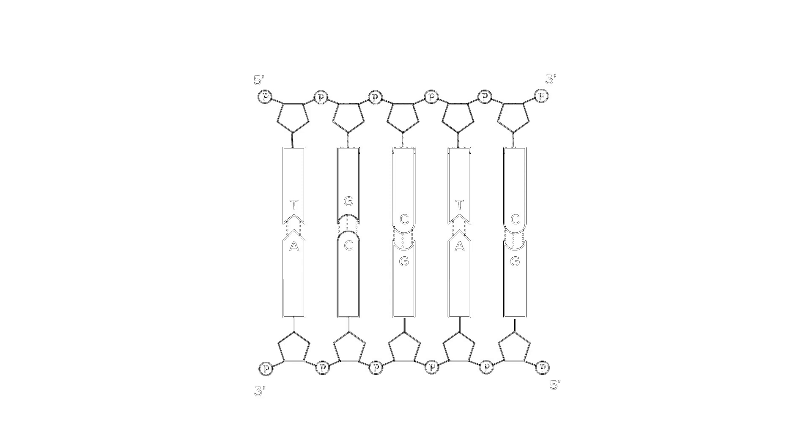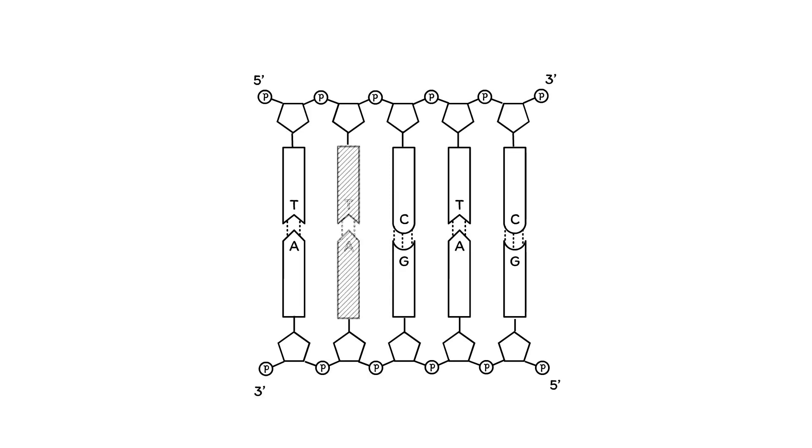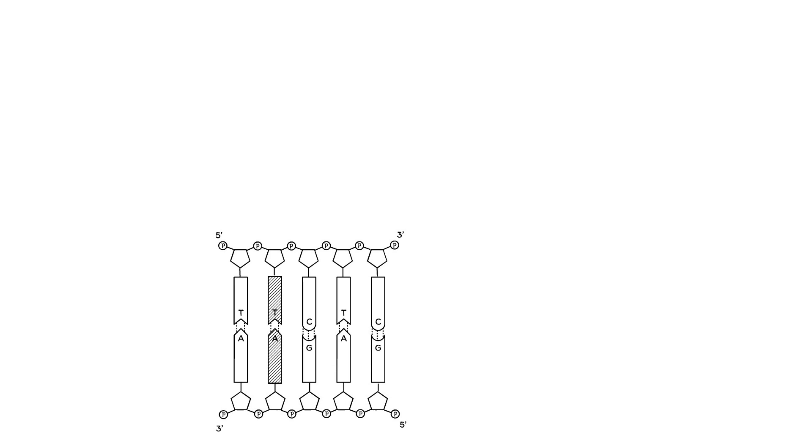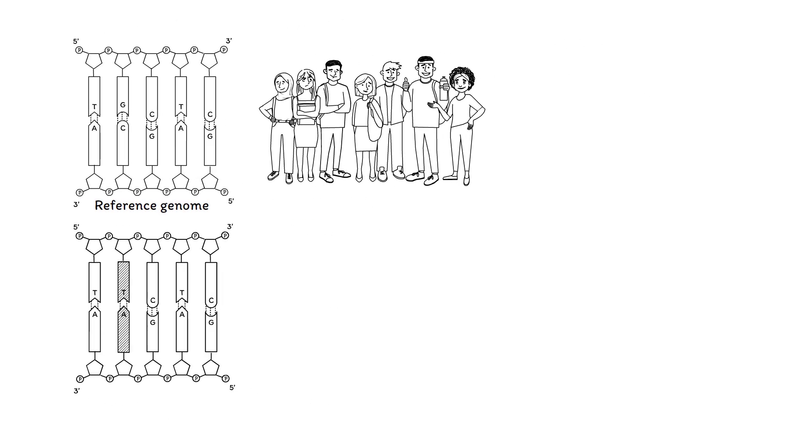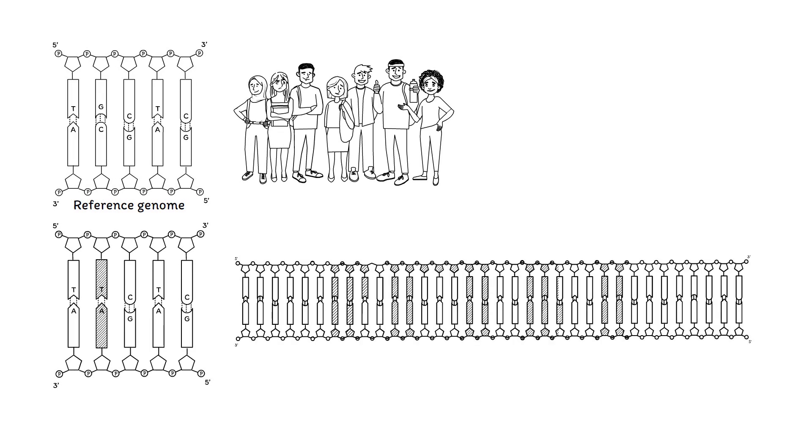Genetic variants are differences in the genetic sequence of an individual compared to the consensus sequence in most other individuals, which is also known as the reference genome. Genetic variants come in different lengths, sometimes just a single nucleotide and sometimes bigger stretches of DNA.